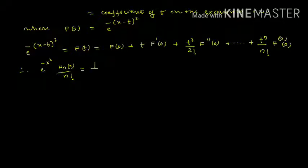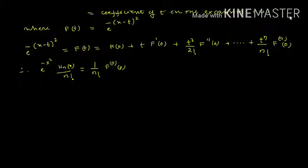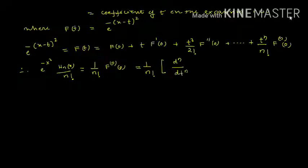We can write this as 1/n! times F^(n)(0), that is the nth derivative d^n/dt^n of F(t) = e^(-(x-t)²), evaluated at t=0.